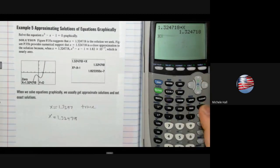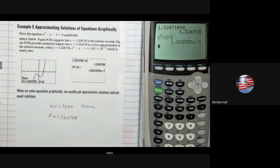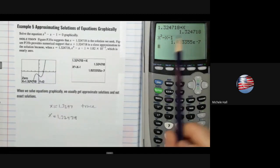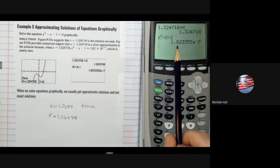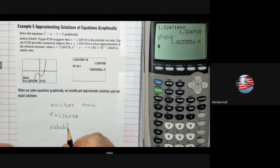So we have x to the third minus x minus 1. I want to hit enter. It says that when this x is substituted in here, I get 1.87. The calculator says that we get 1.8233355 and e to the negative 7.